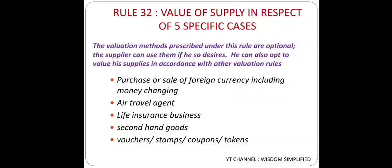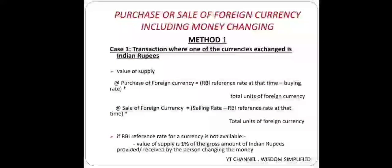Rule 32 gives provisions on how to find out Value of Supply for these five specific cases. Let's look at them one by one. First is purchase and sale of foreign currency including money changing. There are two methods to find the Value of Supply. Method 1, Case 1: transactions where one of the currencies exchanged is Indian Rupees - meaning converting dollar to rupees or rupees to dollar. One of the currencies must be Indian Rupees.